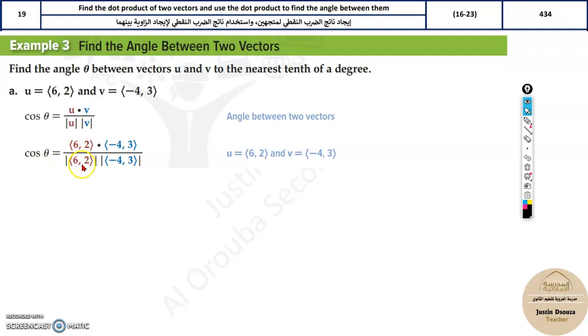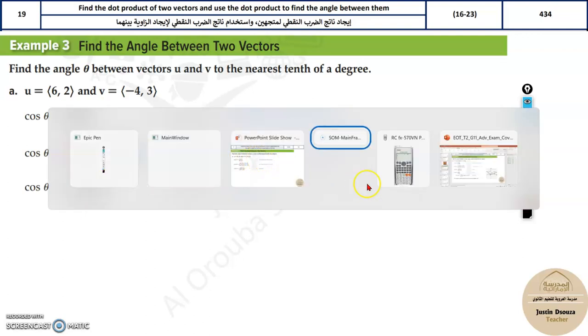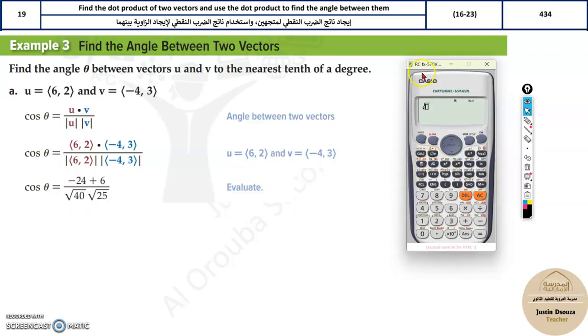So now all you need to do is multiply the first term: six times minus four is minus 24 plus two times three is six.